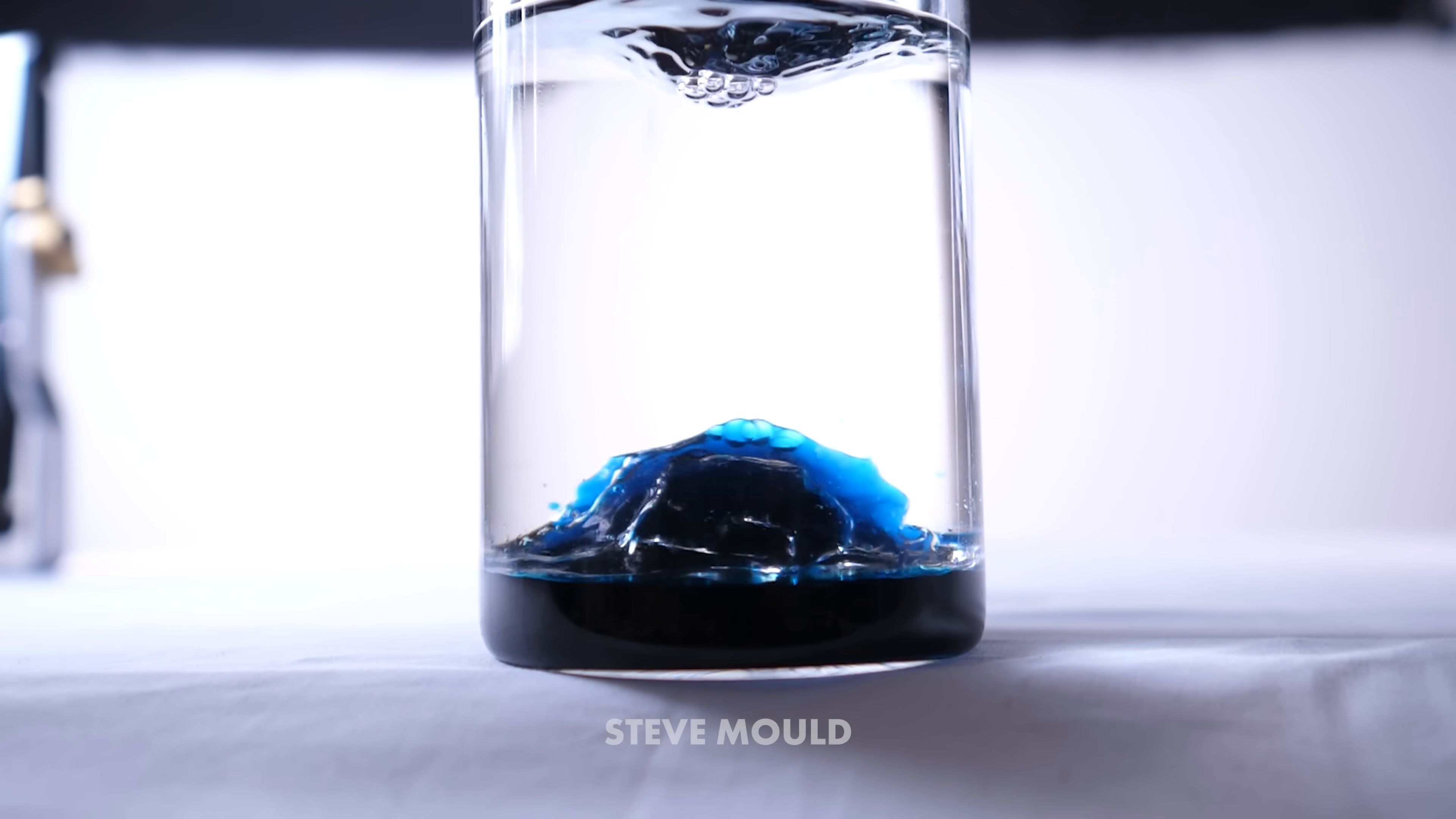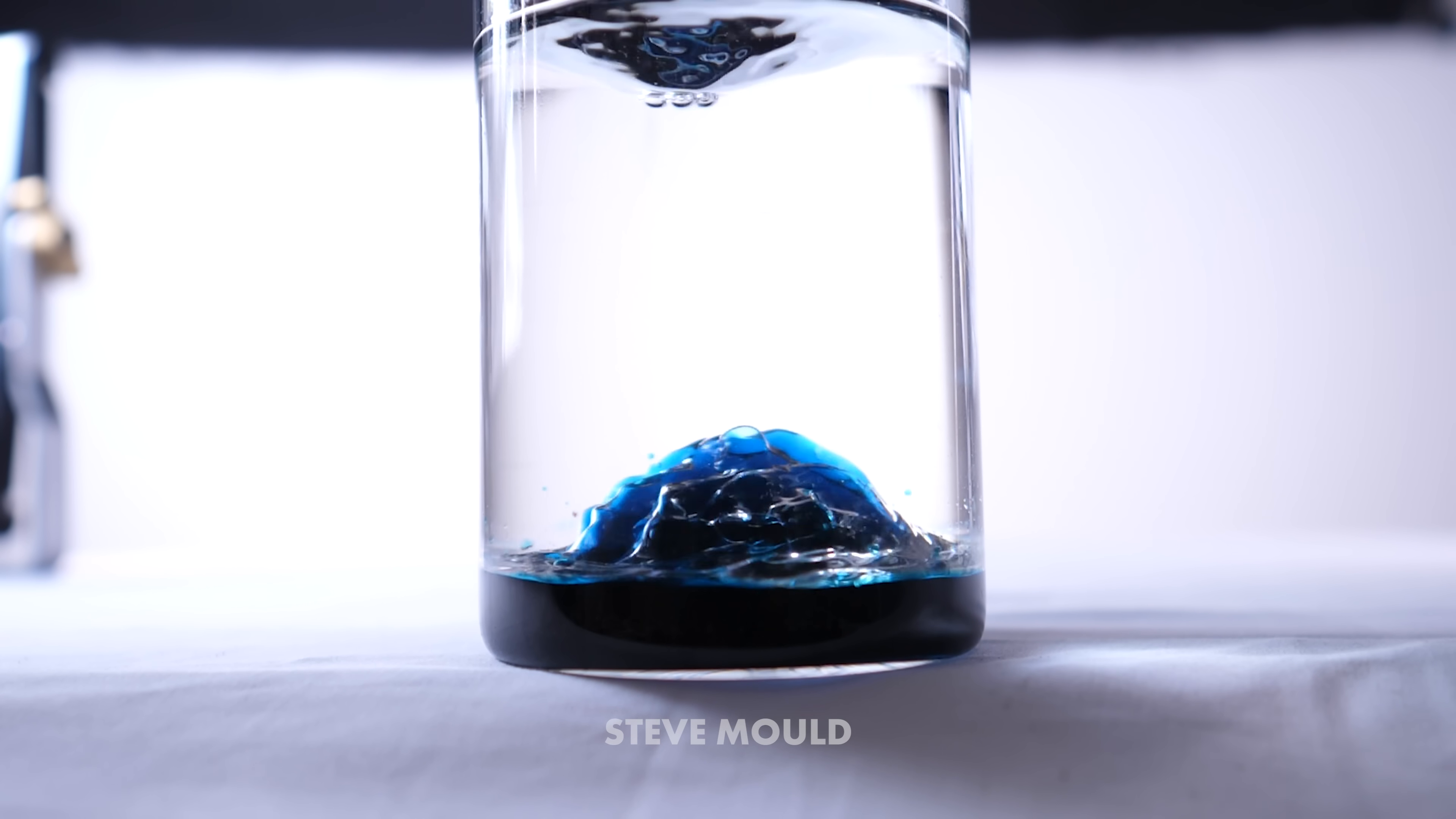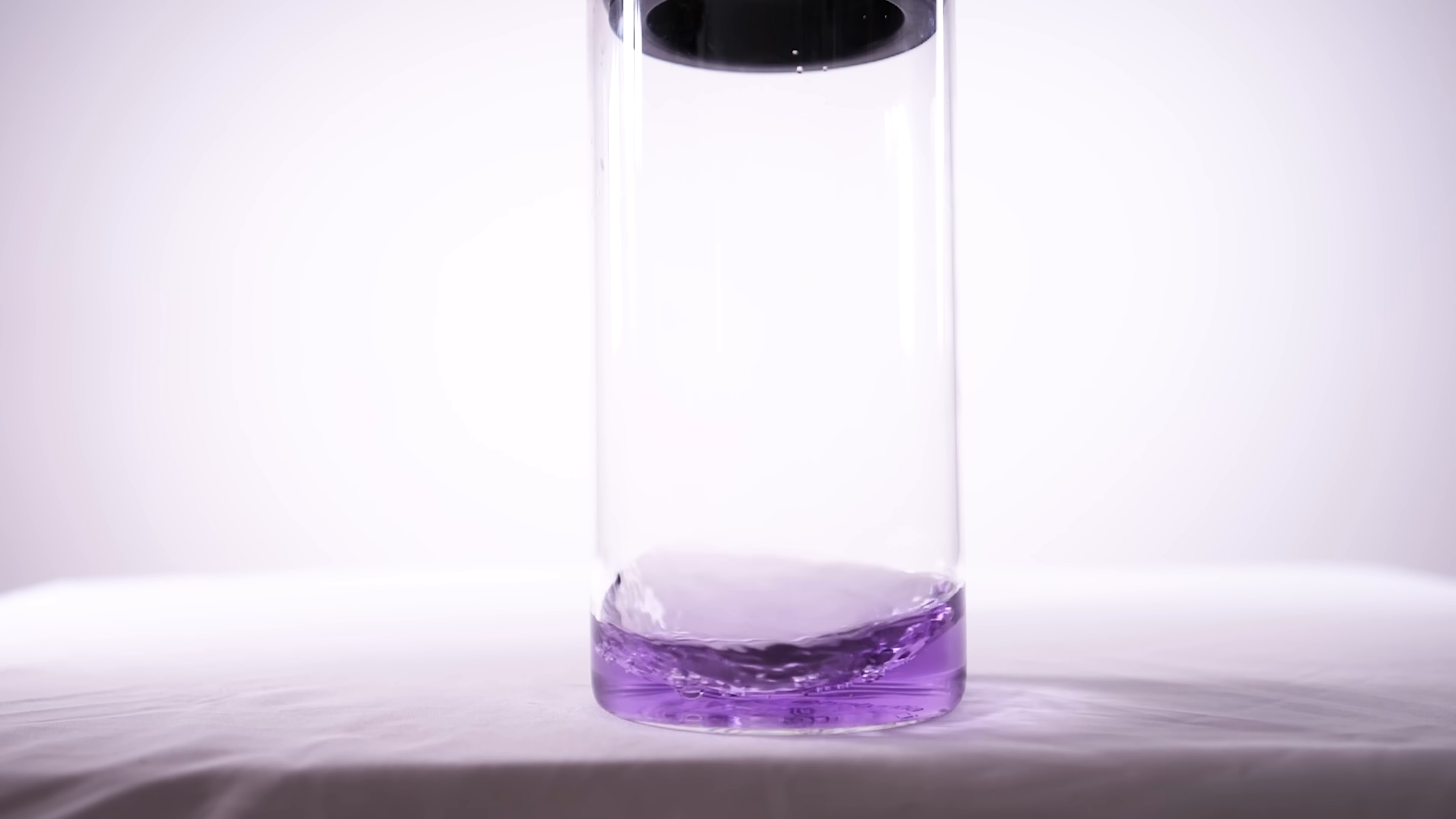If you're still not convinced that this behavior is weird, consider what would happen if I replaced the less dense top fluid with an even less dense fluid—specifically air. In this case, look, the more dense fluid does indeed fling out to the sides.